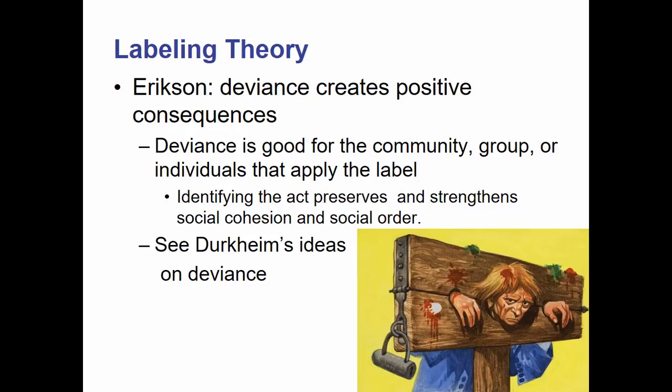Another theorist within the labeling theory school is Erickson, who stated that deviance creates positive consequences. This is very similar to Emile Durkheim's ideas of deviance as well. Erickson sees deviance as being good for a community, group, or individuals that apply that label. It looks at why we as a society choose to label people as being deviant, and when we identify people as deviant, the act preserves and strengthens social cohesion and social order.